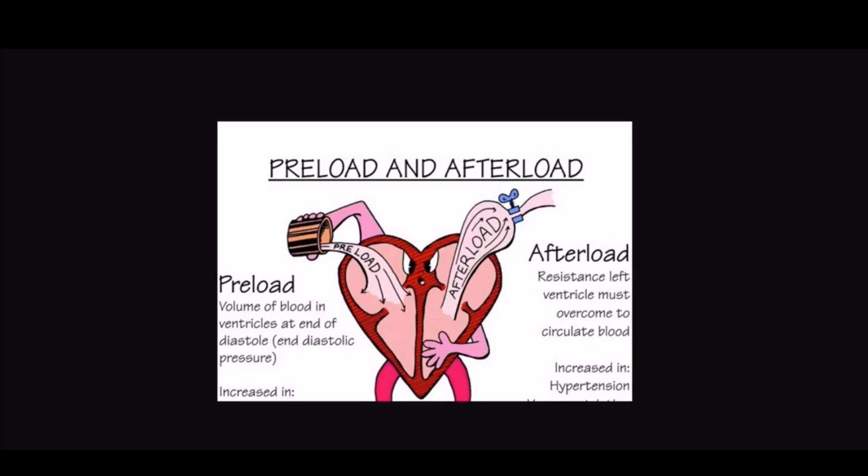Systemic vascular resistance has a normal value of 900 to 1500 dynes per second per centimeter to the negative fifth power. It is the resistance in the systemic vascular system that the left ventricle has to pump against when it contracts. Pulmonary vascular resistance is the resistance in the pulmonary vascular system that the right ventricle has to pump against when it contracts.